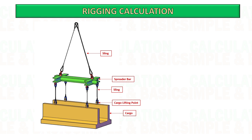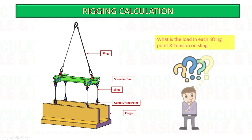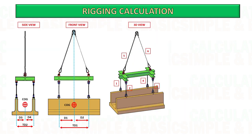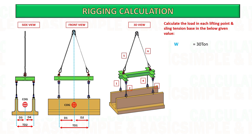In this video you will learn how to calculate the load in each lifting point of the cargo and also the tension on the sling based on the given weight and dimension of the cargo. In this example, the weight of the cargo we need to lift is 30 tons. We need to find the load in each lifting point and tension on the sling so we can decide what is the required capacity of lifting gear to be used. This is the other detail and dimension we need for our calculation.